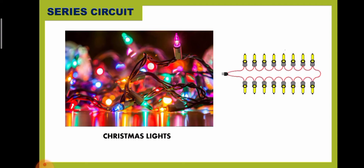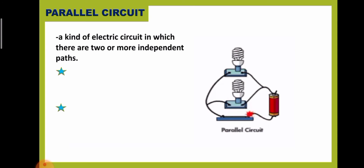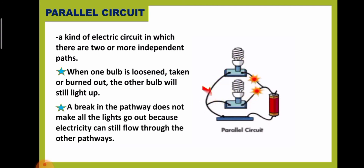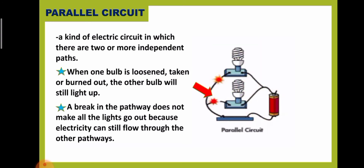Notice how the flow of electricity is arranged for each light bulb. The parallel circuit, on the other hand, is a kind of circuit in which there are two or more independent paths. When one bulb is loosened, taken, or burned out, the other bulb will still light up. A break in the pathway does not make all the lights go out because electricity can still flow through the other pathways.